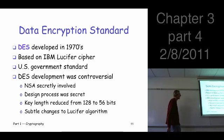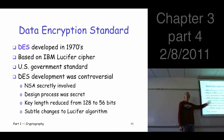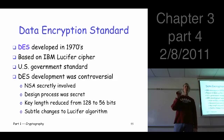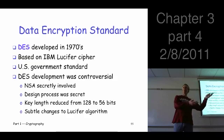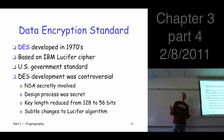That's the true story. NSA said, 'We'll look at it for you, but don't tell anybody.' And that was probably a mistake, because they did make some changes to the algorithm. One change was pretty obvious: they changed the key size from 128 bits to 56 bits — that's a pretty big change. Then they went inside the algorithm and tinkered around, making a few very subtle changes to the internal workings.